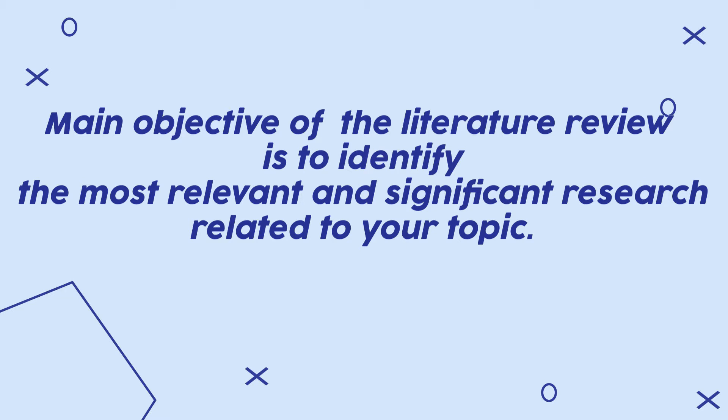The second chapter of a master's thesis introduces the research literature on a specific topic. The main objective is to identify the most relevant and significant research related to your topic, informing the reader of critical studies previously conducted. This provides the reader with sufficient background information to understand the problem. The literature review chapter also provides justification for your study by indicating the weaknesses and gaps in existing research, and it adds credibility by showing you have done sufficient reading and research.